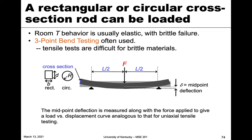We can have either a rectangular or circular cross-section. A circular cross-section has a radius r, while a rectangular one has a width and a depth, giving us the cross-sectional area. These materials tend to be only elastic with very little plastic deformation, exhibiting brittle fracture. In three-point bend, the force point is halfway along the length and we measure the deflection at the midpoint.